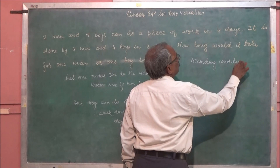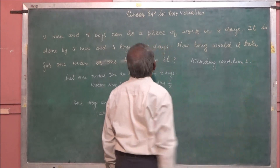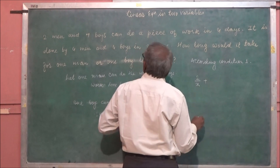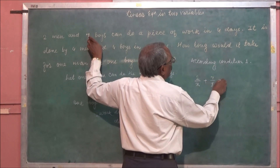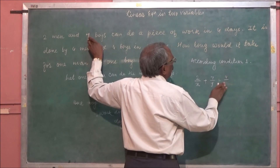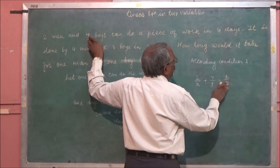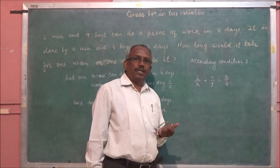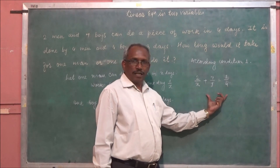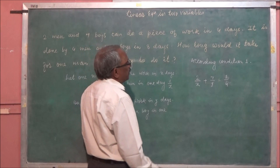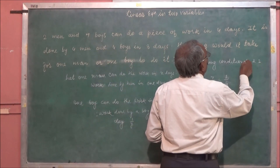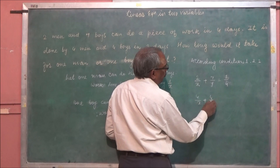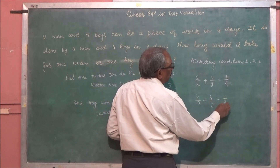According to the first condition: two men and seven boys together complete the work in four days, so 2/x + 7/y = 1/4. According to the second condition: four men and four boys complete the work in three days, so 4/x + 4/y = 1/3.